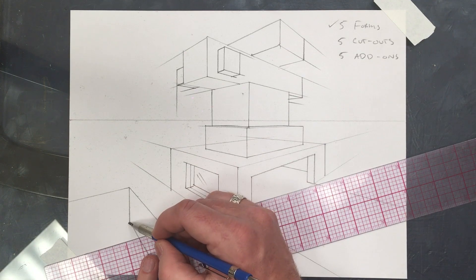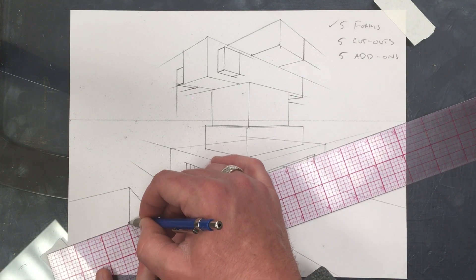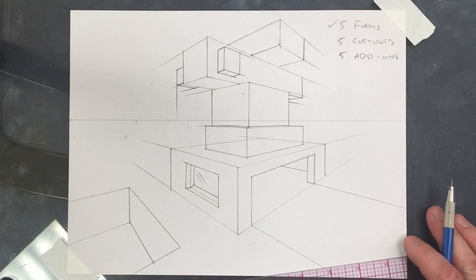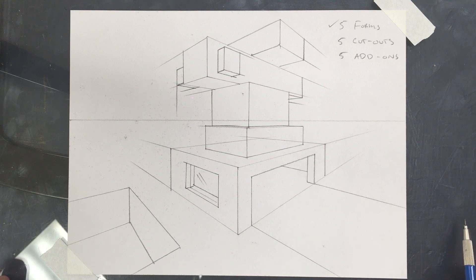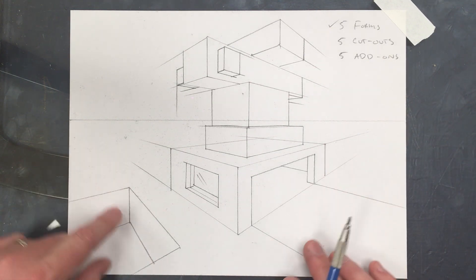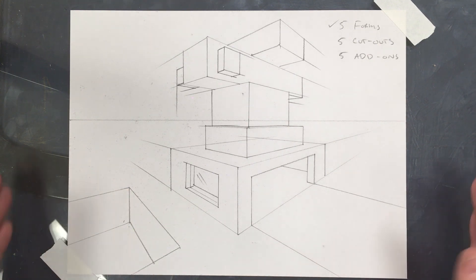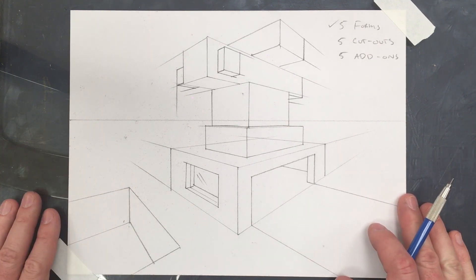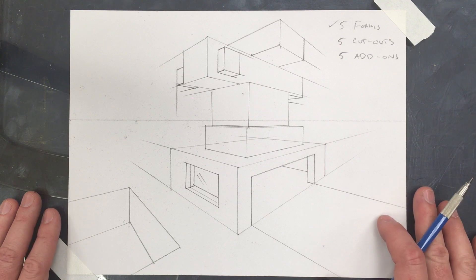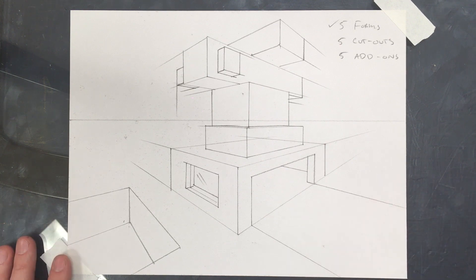The further you get away from the vanishing points, it can become a little skewed. And the idea is to simply trust the rules that horizontal lines go to the vanishing points, and vertical lines are parallel with the edge of the paper. And it'll work out just fine. You can be very creative with this.